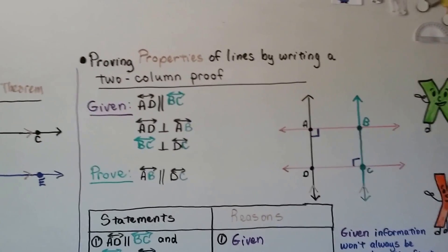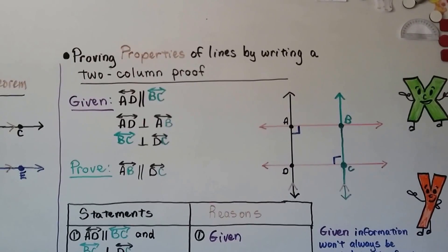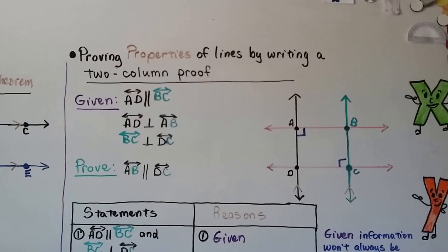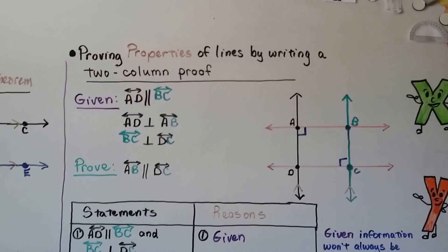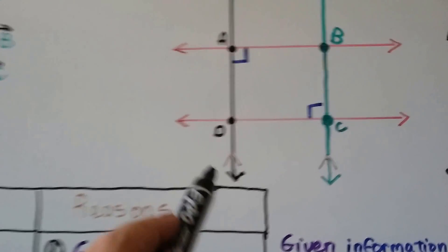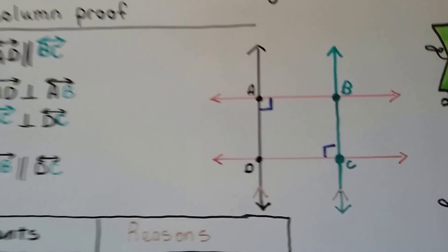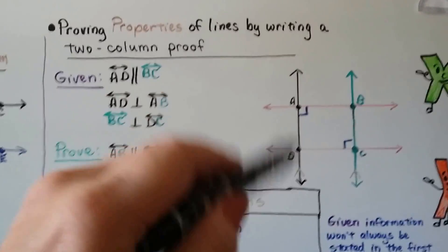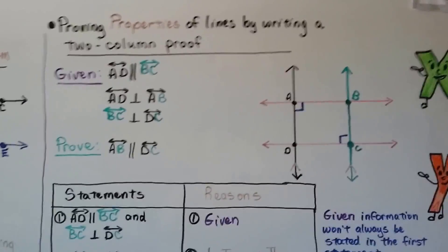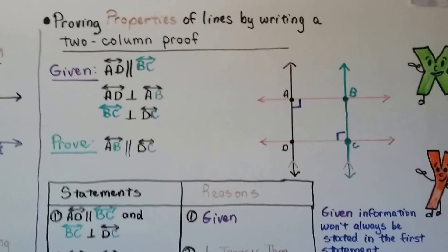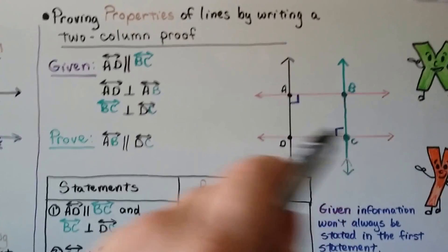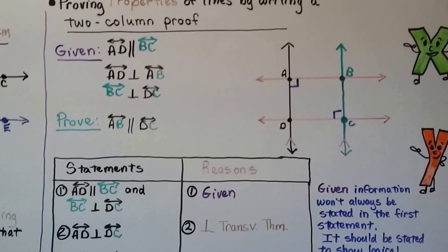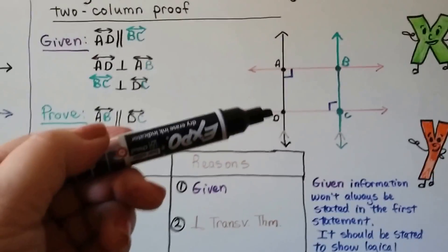Proving properties of lines by writing a two-column proof. We have a black line AD and a green line BC, with two red transversals going through them. It's given that the black line AD is parallel to the green line BC — we can see the parallel marks. It's also given that line AD is perpendicular to AB, and that line BC is perpendicular to DC. We need to prove that line AB is parallel to line DC — we need to prove the top red one is parallel to the bottom red one.